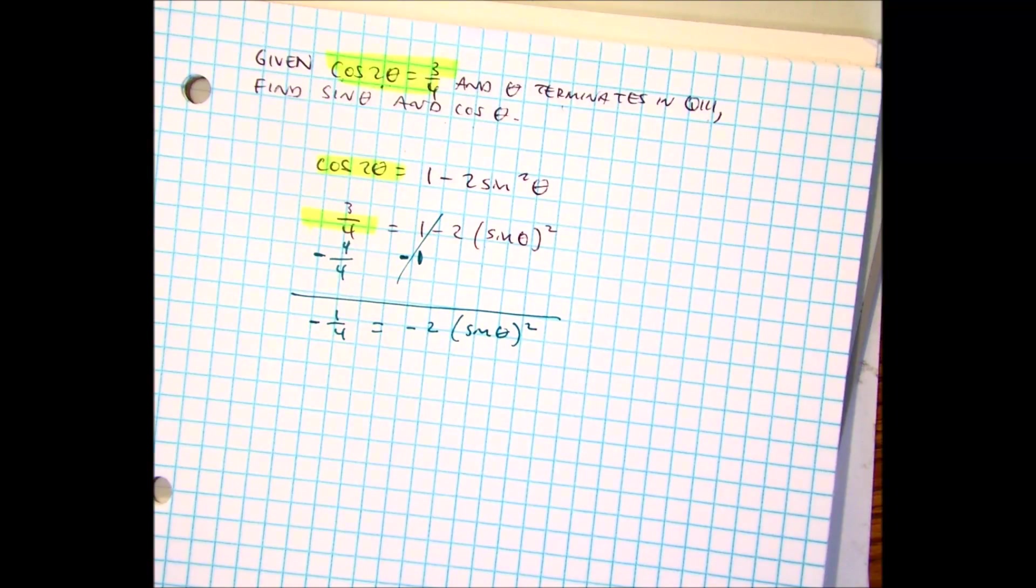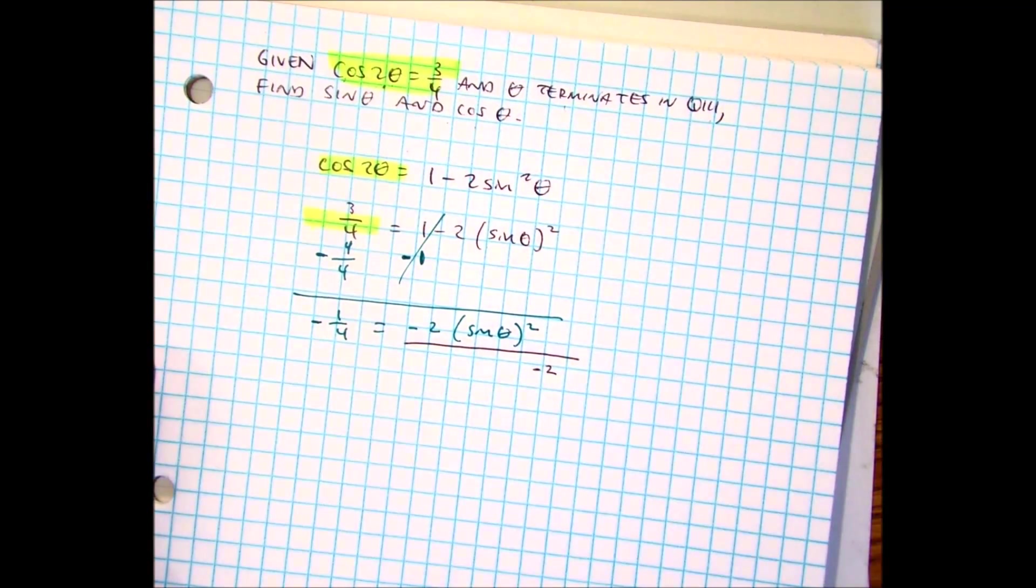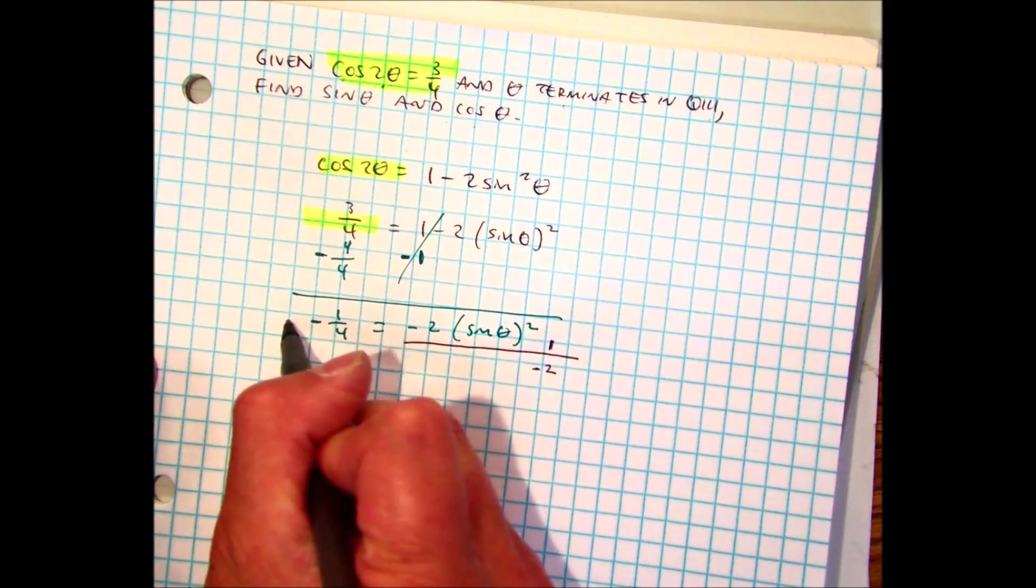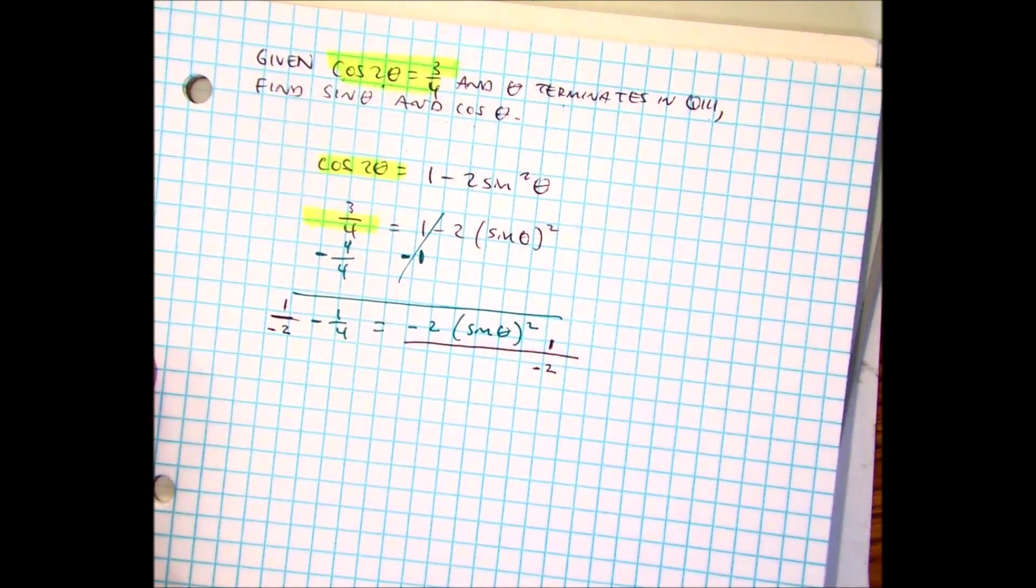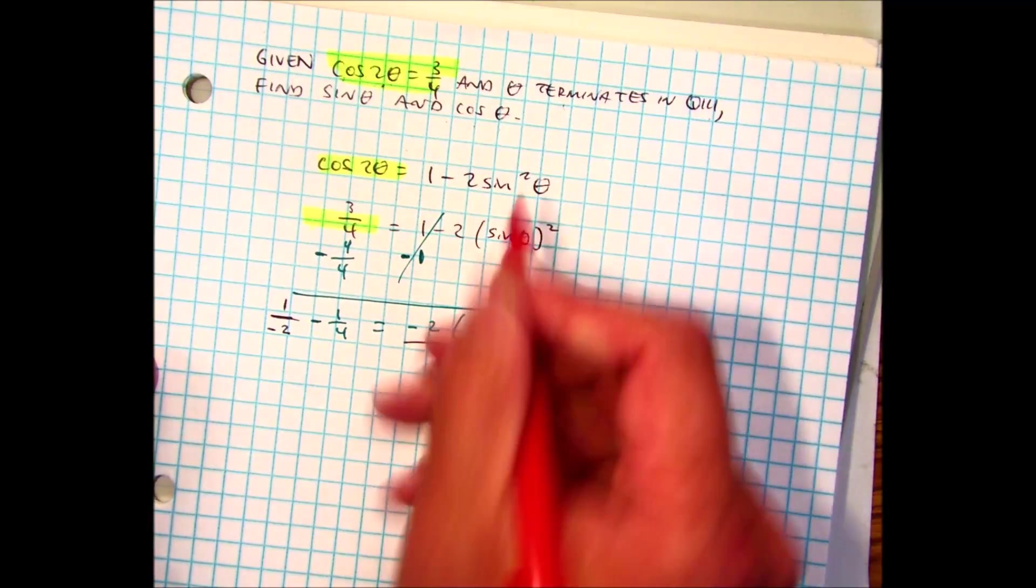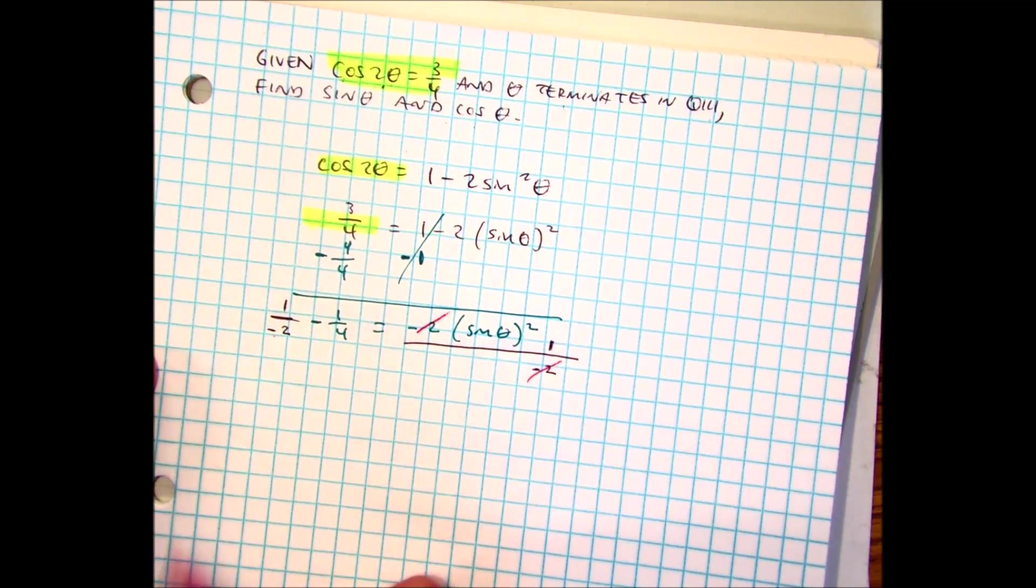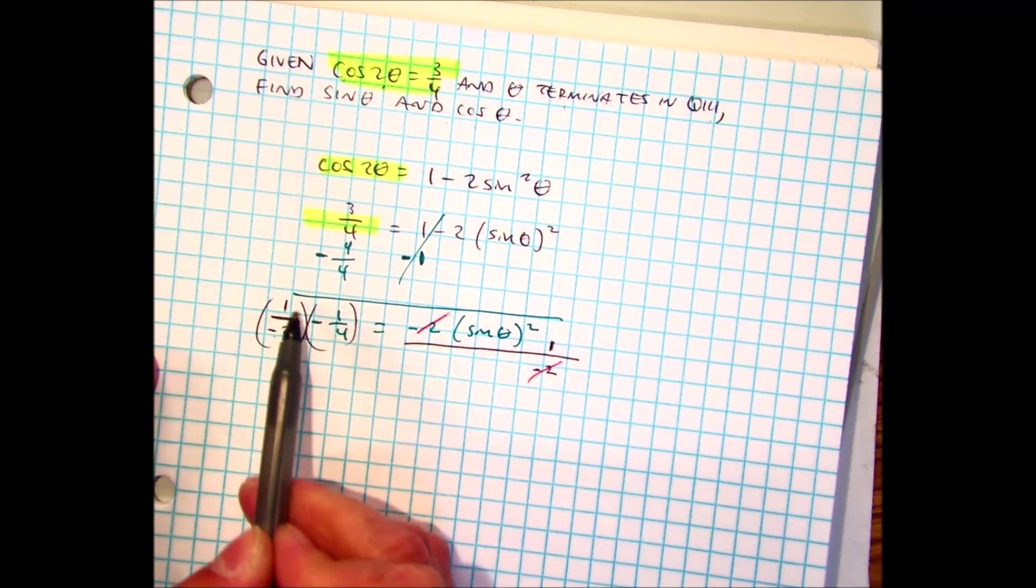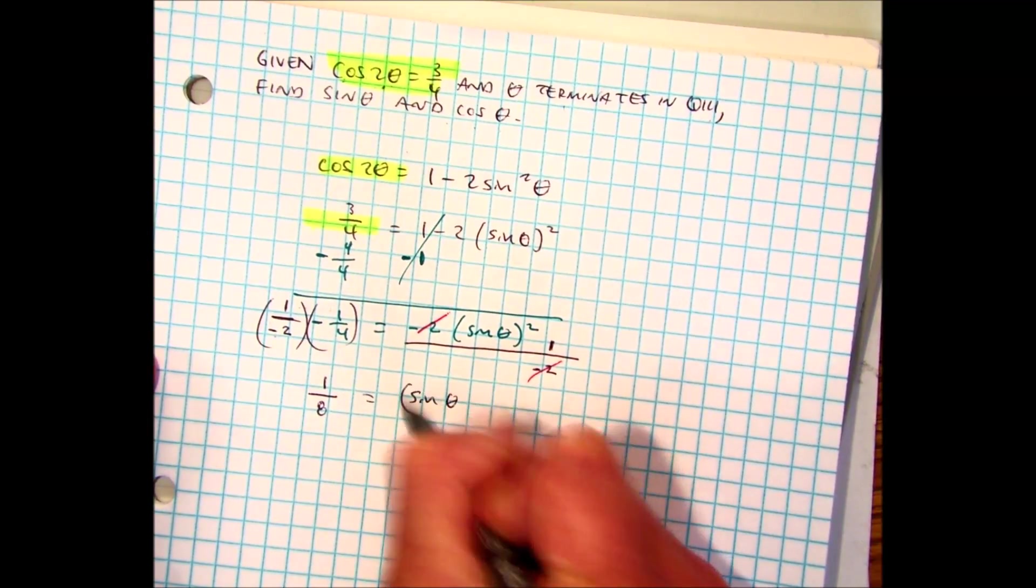Square root or divide it by negative 2? Divided by negative 2. Attention. Dividing by negative 2 is the same thing as multiplying by negative 1 half. Notice that negative 2 is in the denominator. My negative 2's cancel here. And then negative times a negative is positive. So this is not subtracting, it's multiplying. So you just multiply across. I get 1 eighth equals sine of theta squared.